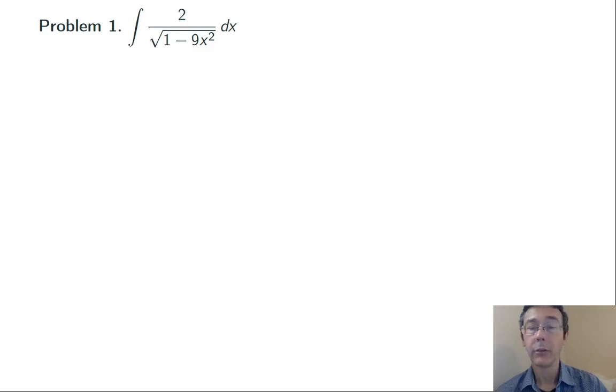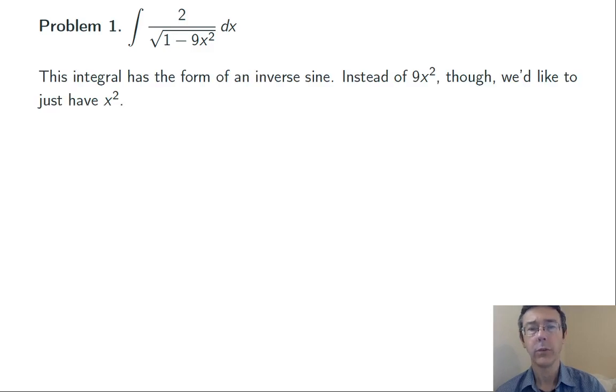Problem one. Integral 2 over the square root of 1 minus 9x squared dx. So I see the square root in the denominator with 1 minus something squared. So this is looking like an inverse sine kind of integral. The problem is that we've got a 9x squared there instead of just an x squared.